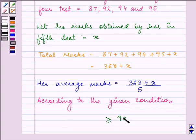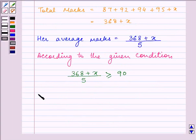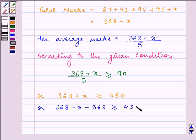So, the average marks that we found out should be greater than or equal to 90. Now, we need to solve this inequality to get the required value of X. On multiplying both sides by 5, we have 368 plus X is greater than or equal to 450. Subtracting 368 from both sides, we have X is greater than or equal to 82.